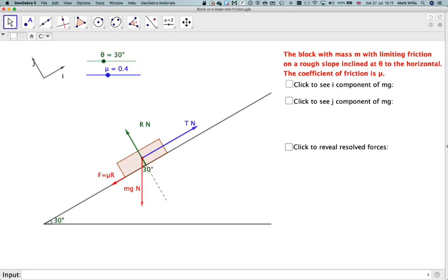Obviously, we're going to have components for the weight, because that will be the weight acting in the same direction as the friction, we need to consider that one mg sin theta.